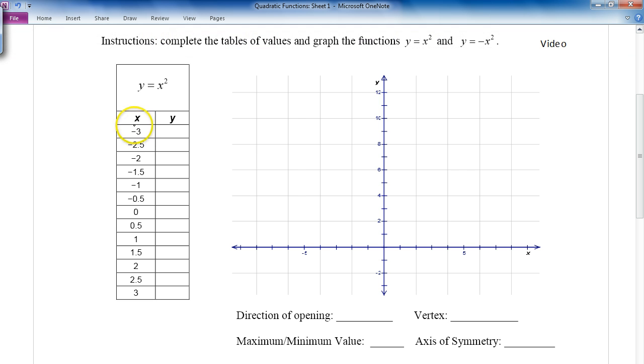So what this means is I'm given my x values. These are called my independent variable. The y is called my dependent variable because the y depends on the x. So if x is negative 3, that means y is going to be negative 3 squared. And remember, we want to square the negative 3, so that's going to give me 9. Negative 2.5 squared—25 times 25 is going to be 625—so 2.5 squared is going to be 6.25.